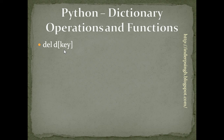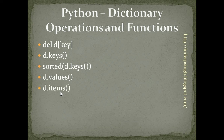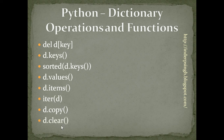del D with a key deletes the item of D with the given key. We can call the keys function on D and it returns all the keys of D. We can get a sorted list of keys using sorted of D.keys. D.values returns all values of D. D.items returns all items of D including the keys and corresponding values. iter of D returns an iterator over all keys of D, which we can use to run a loop. D.copy returns a copy of the dictionary D. D.clear removes all items from the dictionary D.